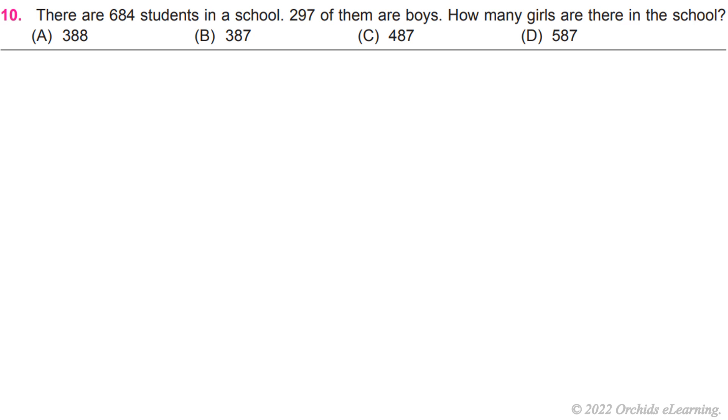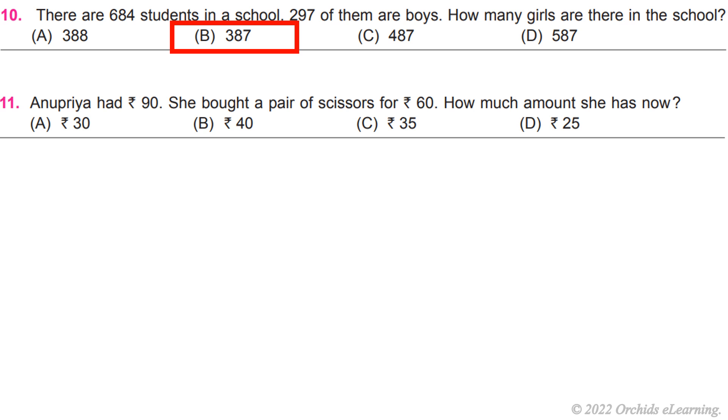Question 11: Anupriya had rupees 90. She bought a pair of scissors for rupees 60. How much amount does she have now? A) Rupees 30.